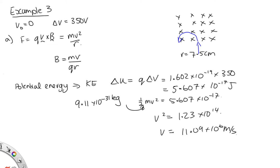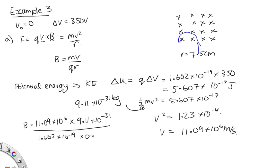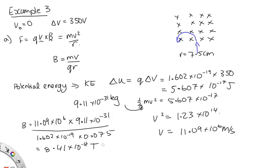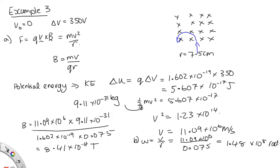Substituting into B = mv/(QR): v = 11.09 × 10⁶ m/s, mass = 9.11 × 10⁻³¹ kg, charge = 1.602 × 10⁻¹⁹ C, radius = 0.075 m. Solving gives B = 8.41 × 10⁻⁴ T. Part B asks for the angular speed of the electron. Using ω = v/r: substituting 11.09 × 10⁶ divided by 0.075 gives 1.48 × 10⁸ radians per second.